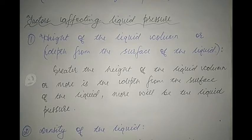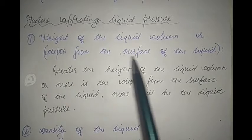Now let us look at the factors that affect liquid pressure. Basically, there are two factors. One is the height of the liquid column, or you can also read this as depth from the surface of the liquid.